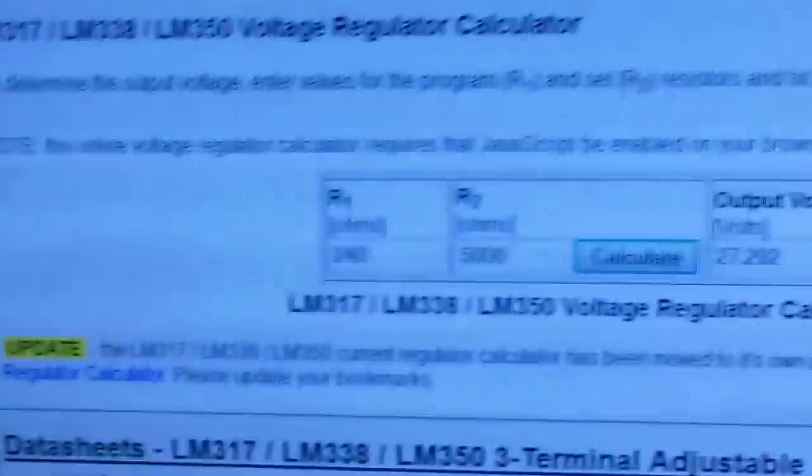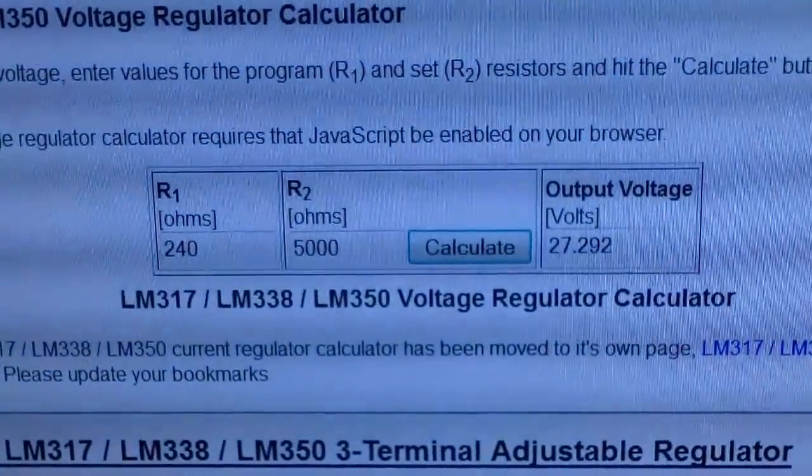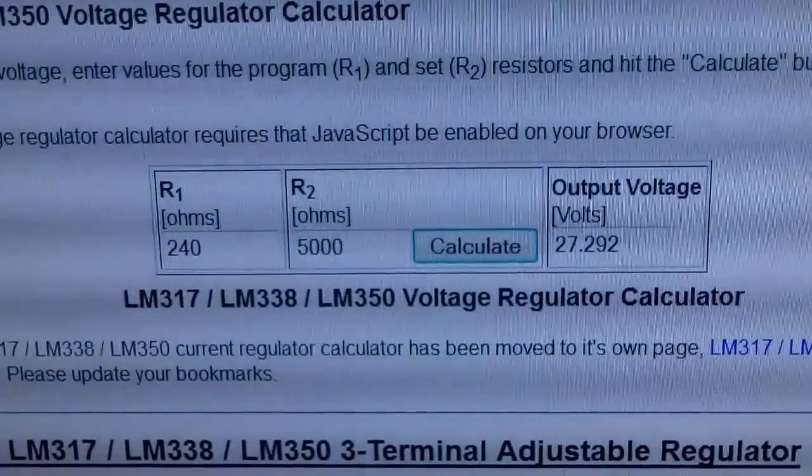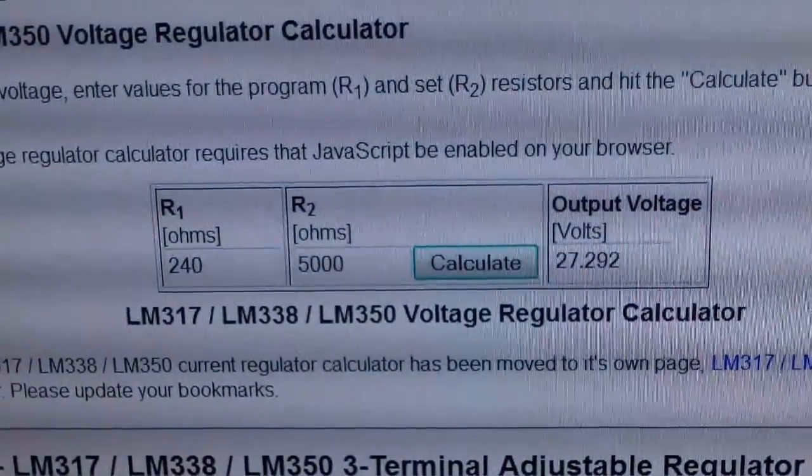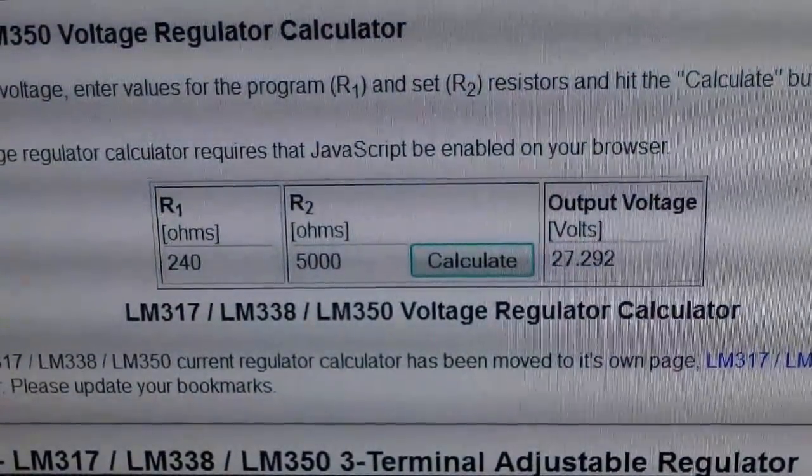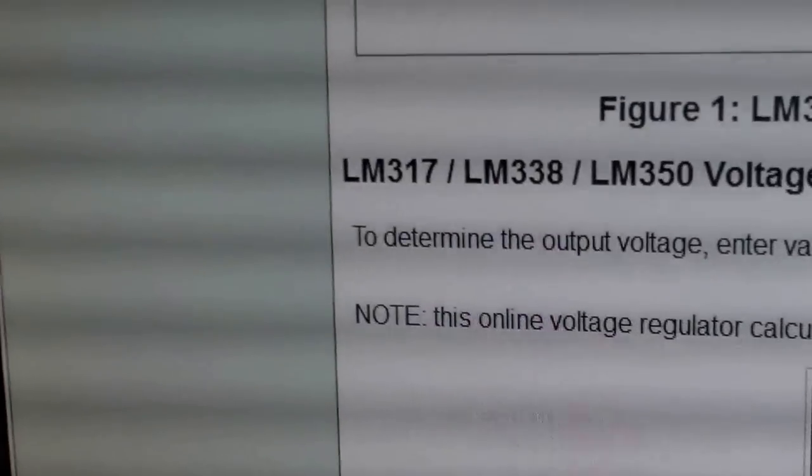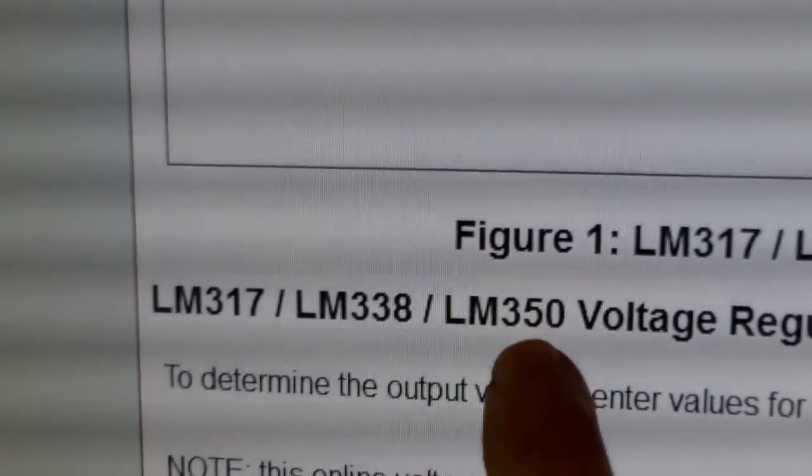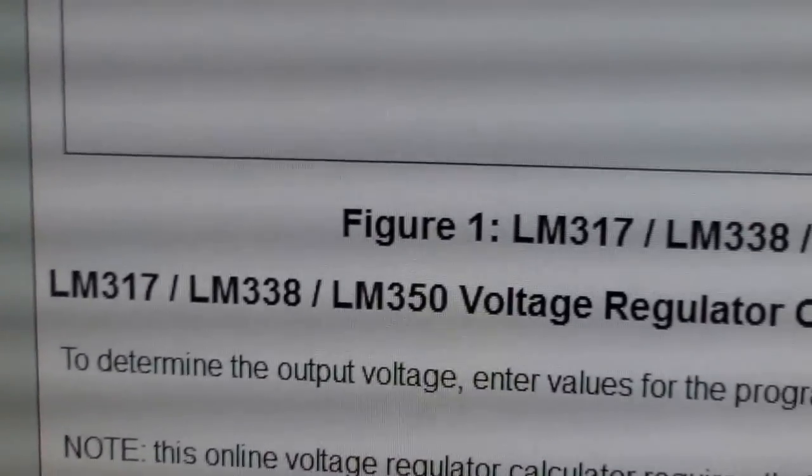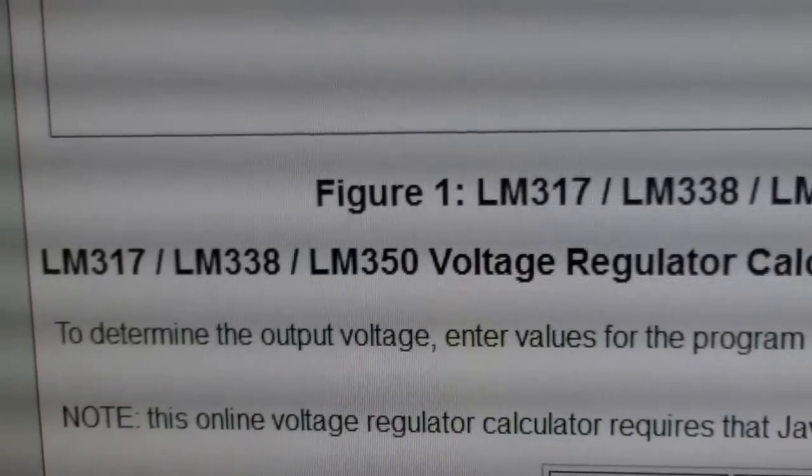On the internet, there's a different voltage regulator calculator for the LM317. The LM350 is the higher amperage, higher current regulator.